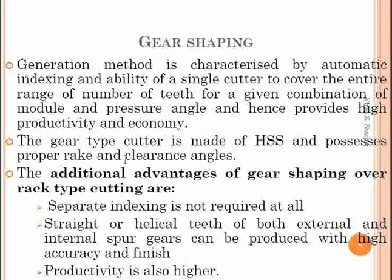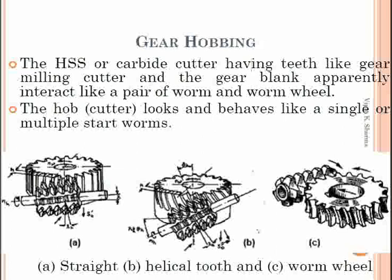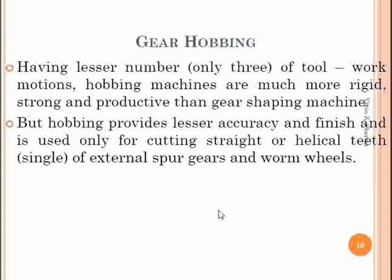The next operation is gear hobbing, where a hob is used to cut the gear teeth on the blank. The HSS or carbide cutter — the gear hob — and the gear blank interact like a pair of worm and worm wheel. The hob behaves like a single or multiple start worm. Having only two or three work motions, hobbing machines are more rigid and strong than gear shaping machines, but hobbing provides lesser accuracy and finish and is used only for cutting straight or helical teeth of external spur gears and worms.